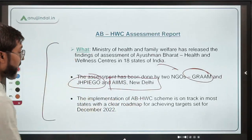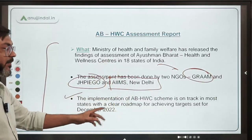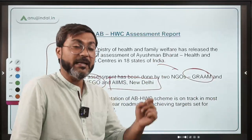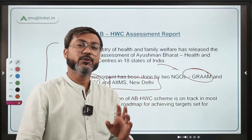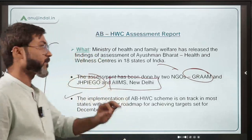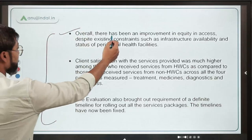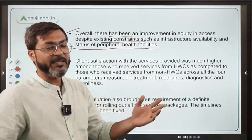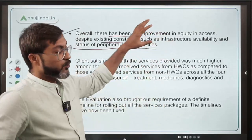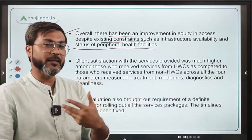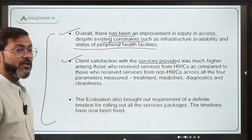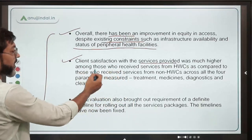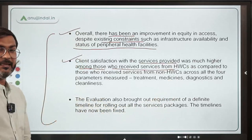The implementation of the Ayushman Bharat Health and Wellness Center scheme is on track as per this report. All targets set to be achieved by December 2022 will be completed. Overall there has been an improvement in equity in access despite existing constraints such as infrastructure availability. Client satisfaction with services provided was much higher in health and wellness centers than in non-health and wellness centers.